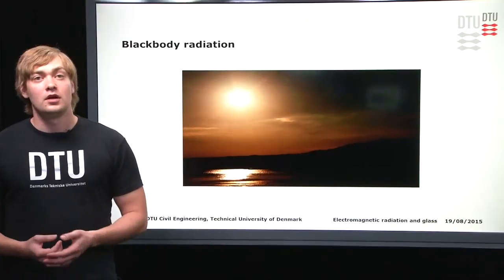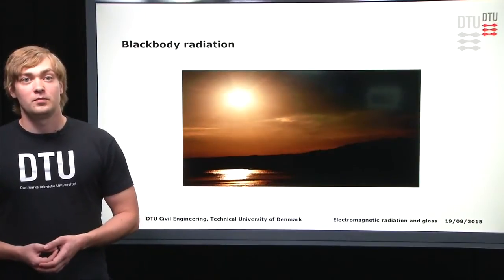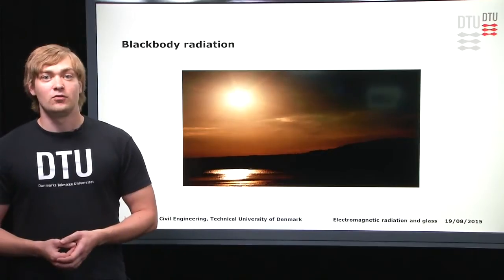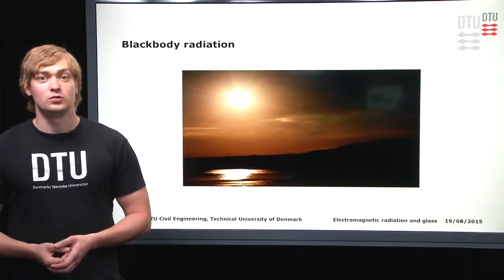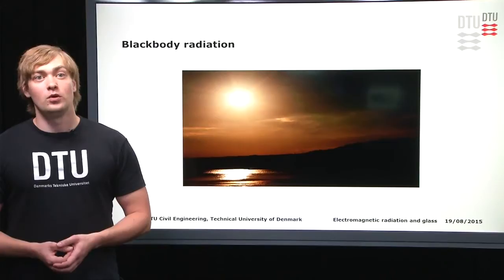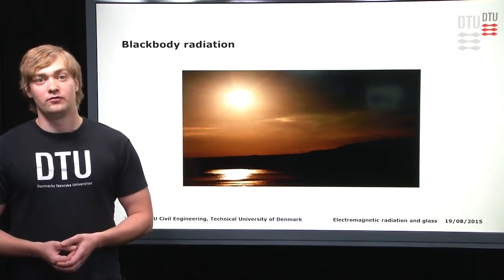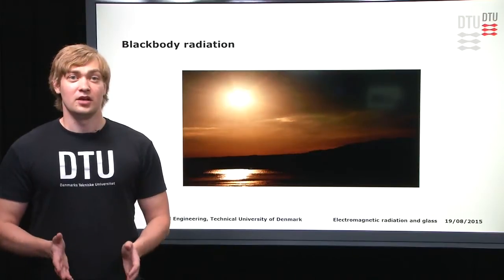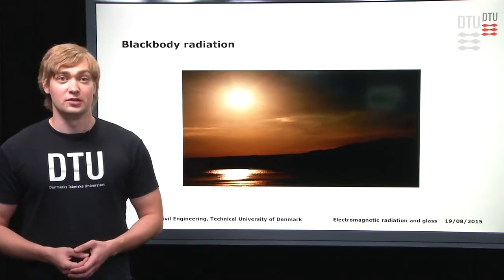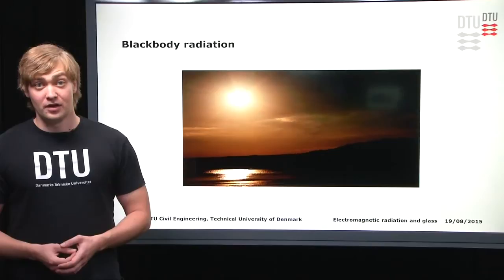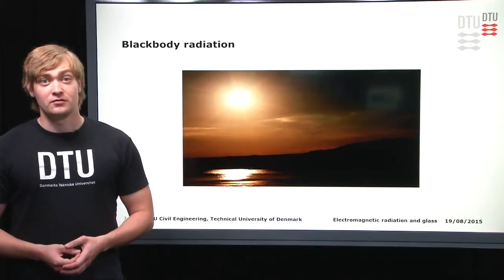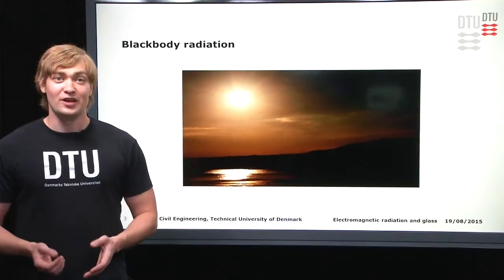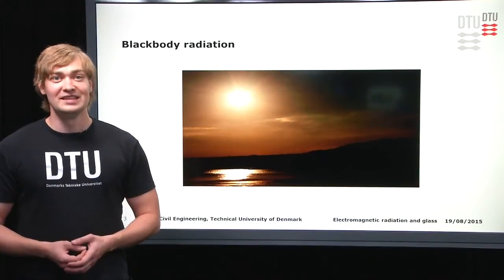First of all, everything emits blackbody radiation. Electromagnetic radiation which we can see — which we call light — is only one small part of this radiation. The largest emitter of blackbody radiation in the solar system is the sun, and the blackbody radiation it emits is the radiation that we use to see in daylight.